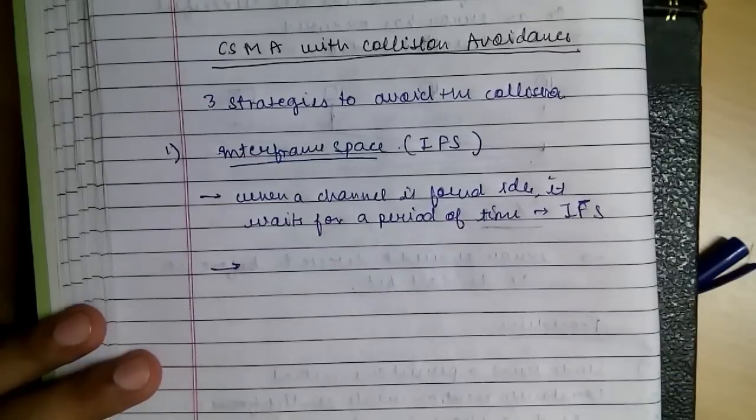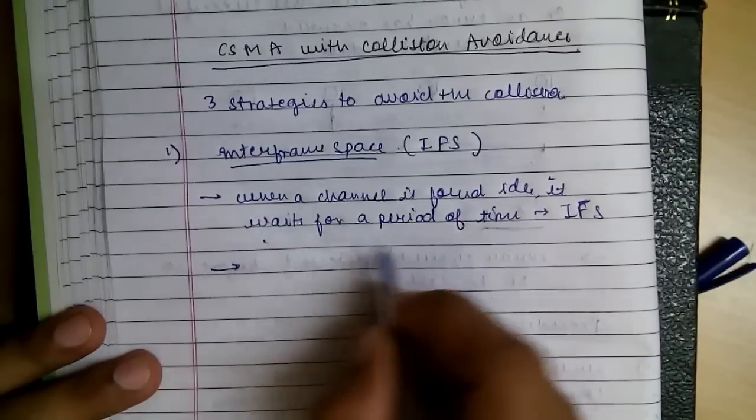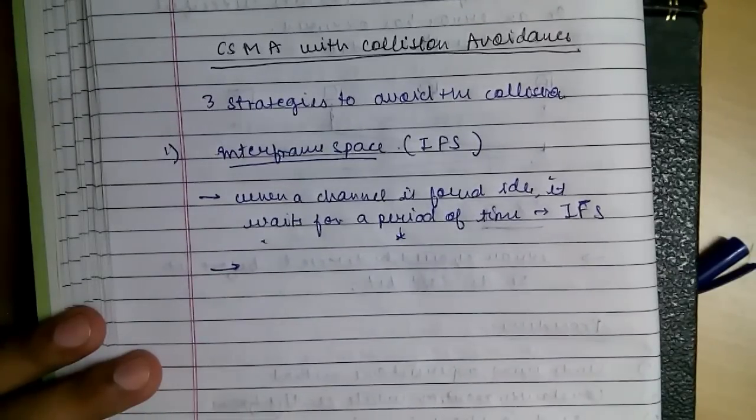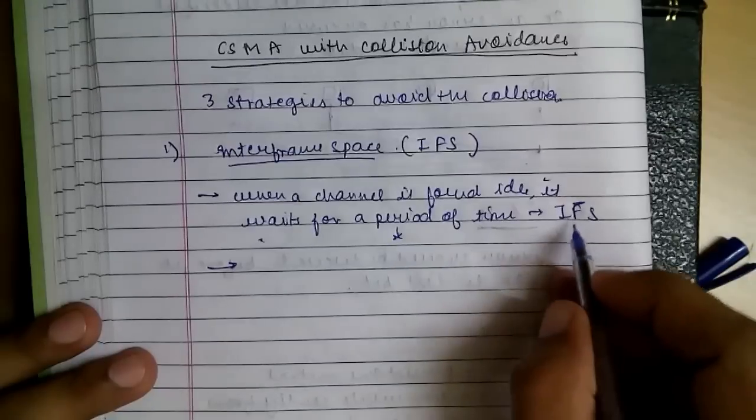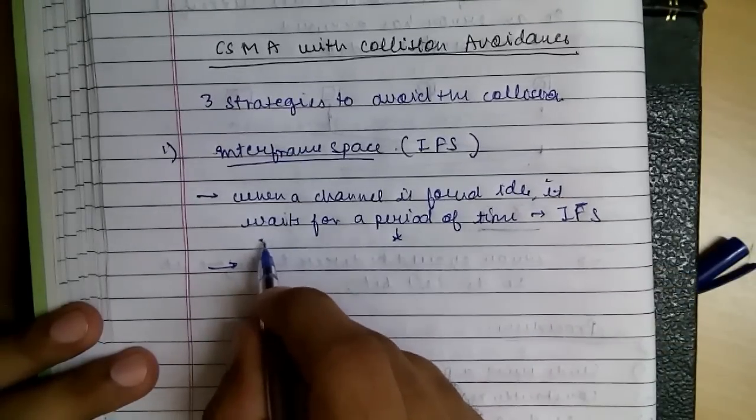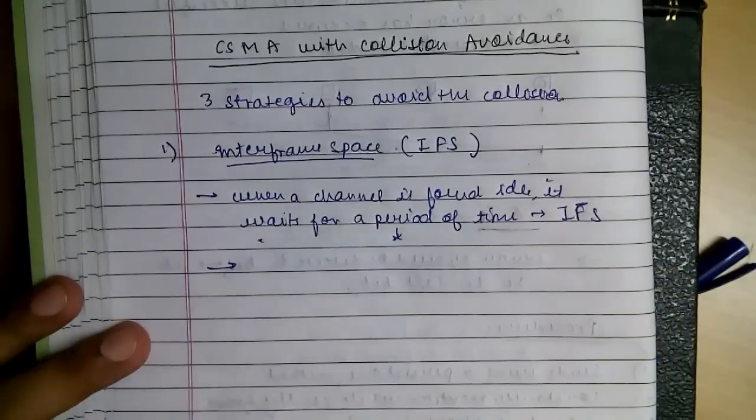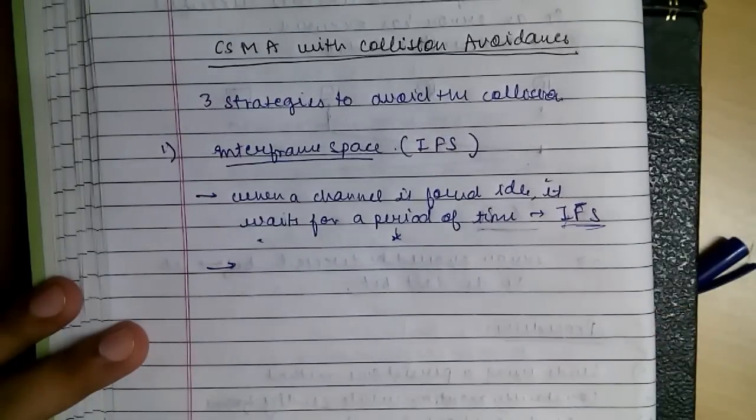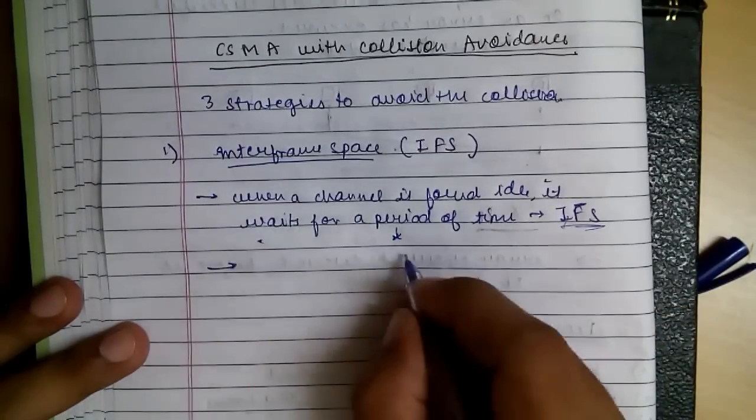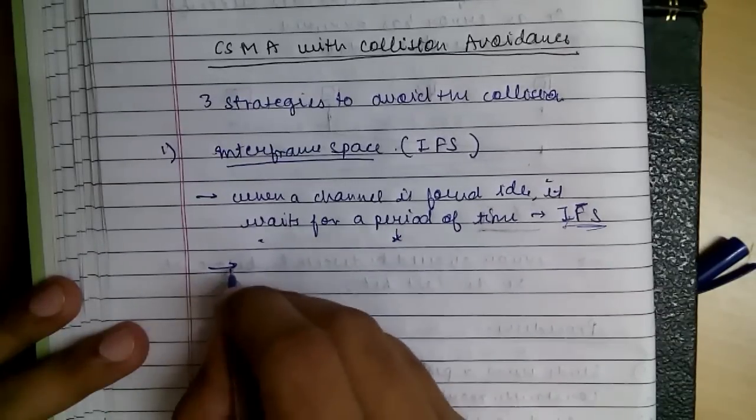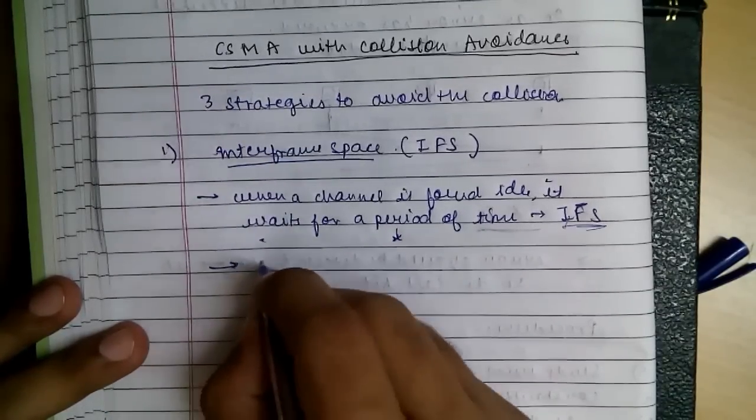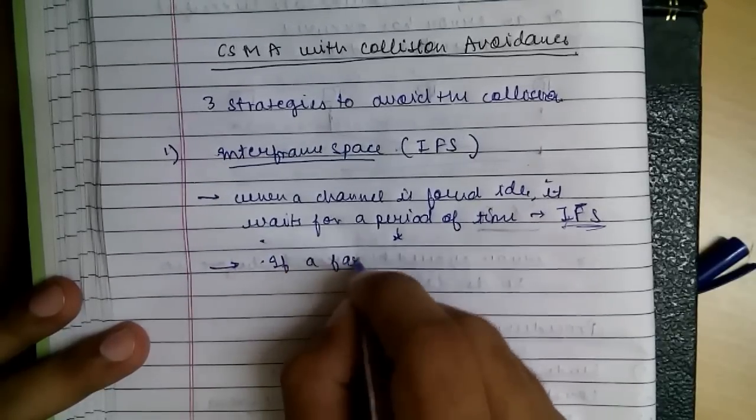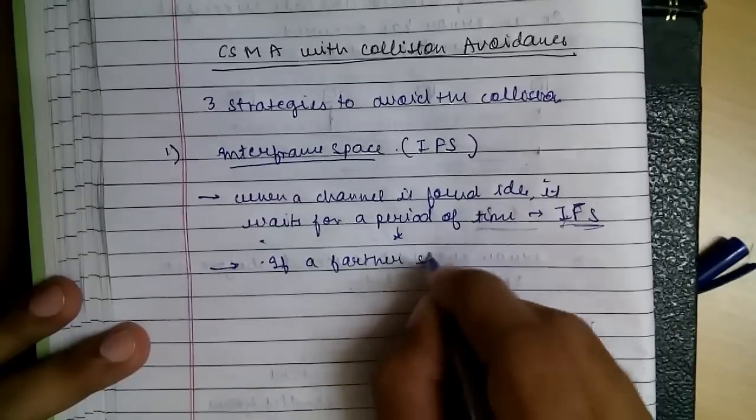Because what this does is if this channel finds the medium idle and it thinks the medium is idle so I can send, but maybe another channel has already sent its packet. So this time allows it to reach this station. That's why it helps in preventing it. If a farther station has sent, it allows it to reach with the help of this IFS.